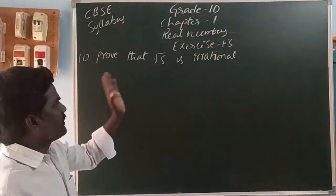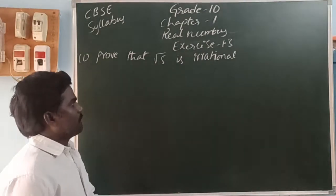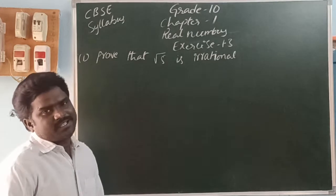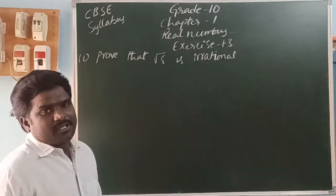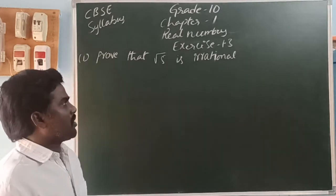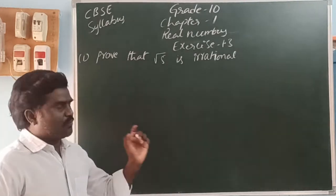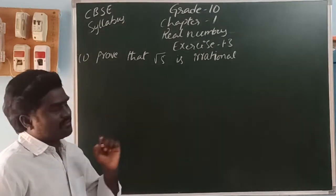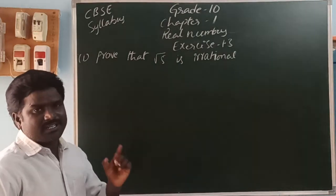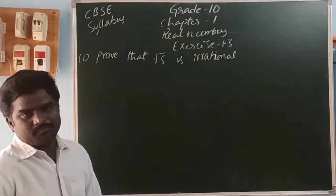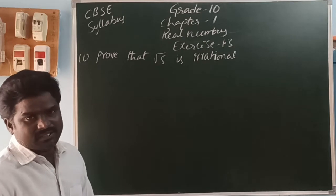Prove that root 5 is an irrational number. How we can prove? By using the contradiction method. What is called the contradiction method? Let us take one statement as correct, then prove that it is wrong. That method is called the contradiction method.